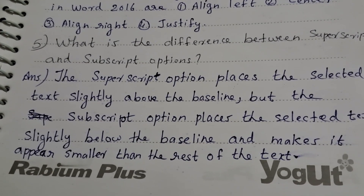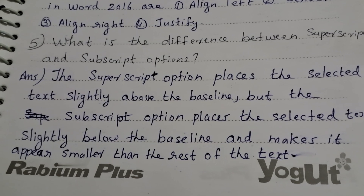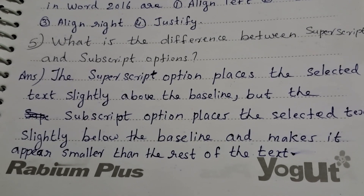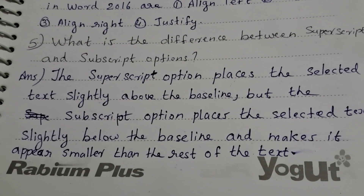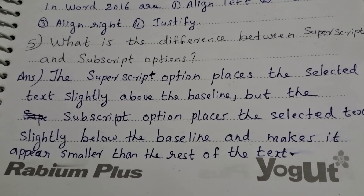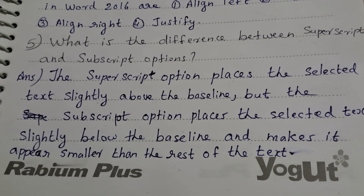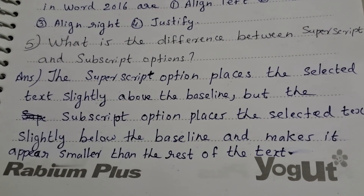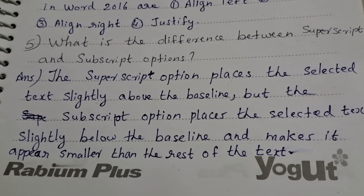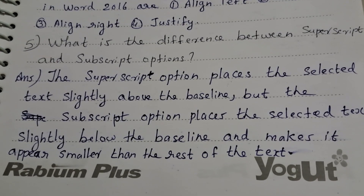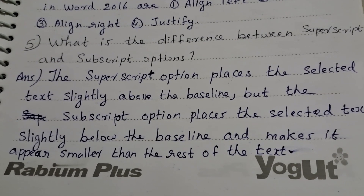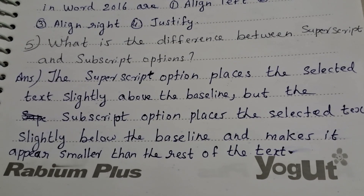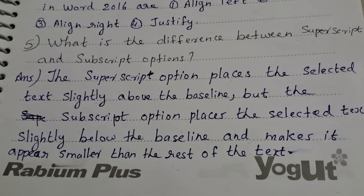Fifth question: what is the difference between superscript and subscript option? The superscript option places the selected text slightly above the baseline. The subscript option places the selected text slightly below the baseline and makes it appear smaller than the rest of the text.